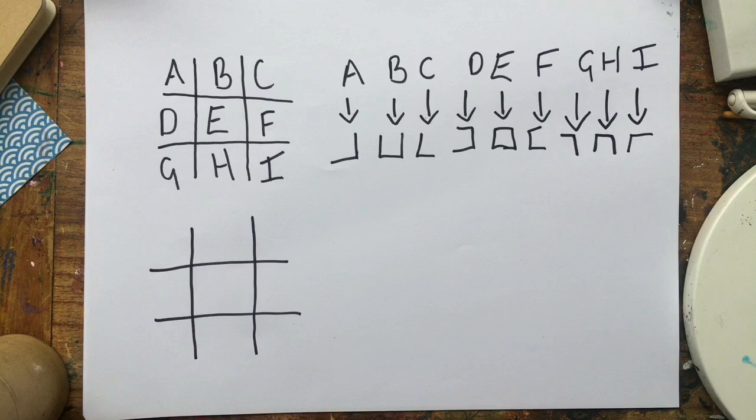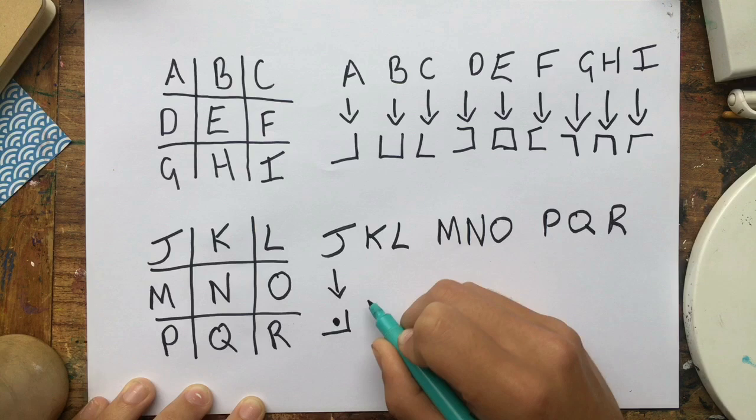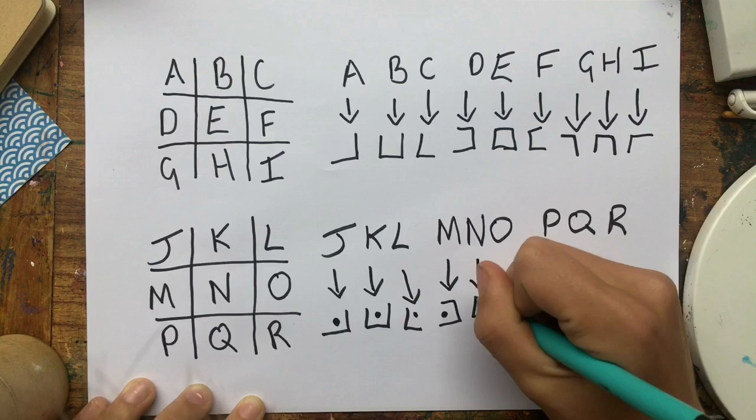For this second grid here, you take the sides of the box that the letters touch, again, just like in the first grid, and this time you add a little dot in the center of the box, just to show that it's the second grid and not the first grid, so people don't get mixed up between the letters from each grid.